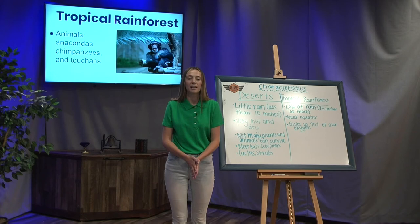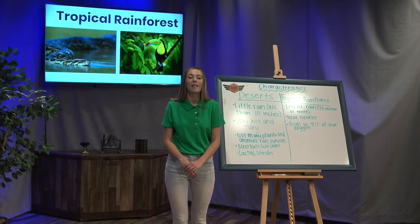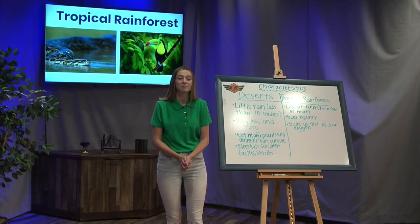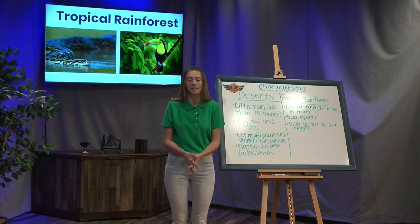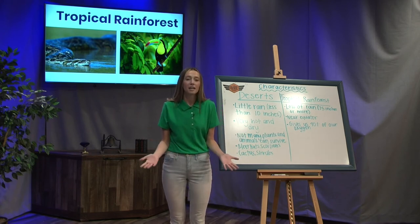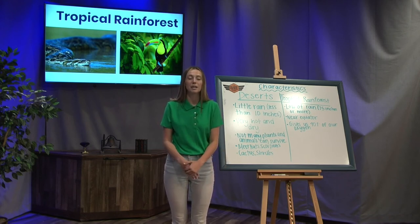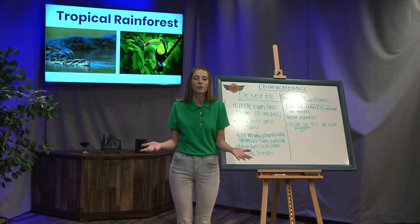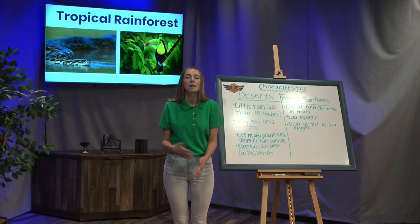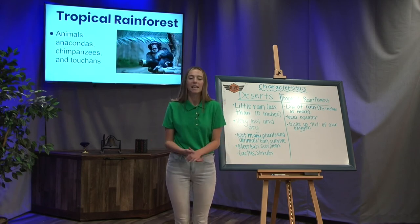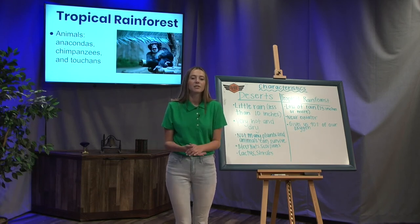One animal that lives in the rainforest is an anaconda — a really big snake, very scary. Another animal is a toucan, a bird with a colorful, beautiful beak. Lastly, we have chimpanzees, which are like monkeys, that live in tropical rainforests. Here are just a few of the animals that live in the rainforest.